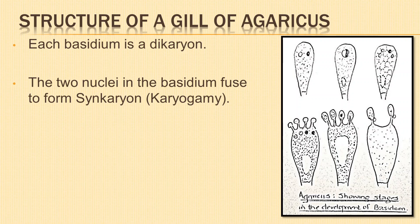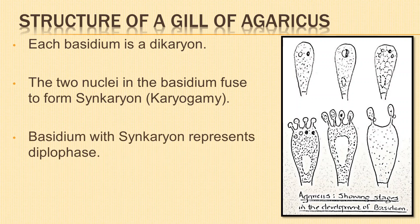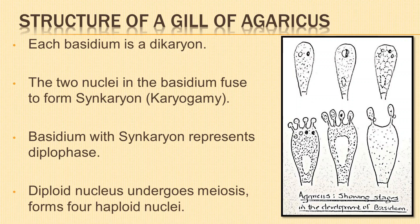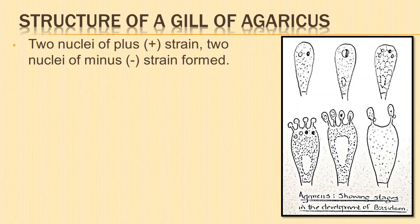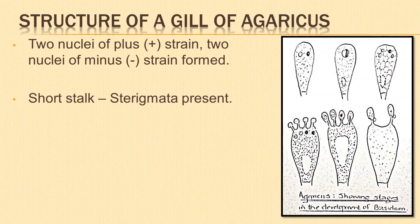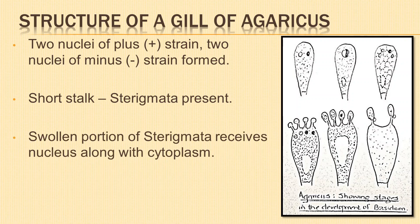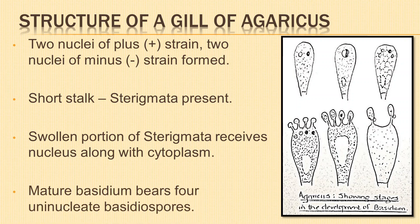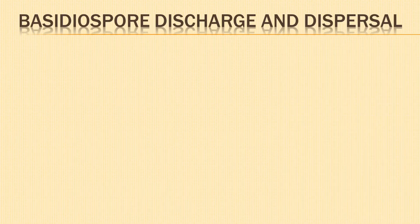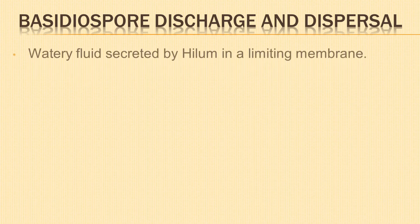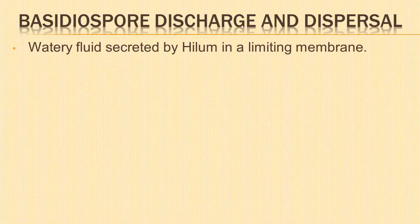The basidium with the synkaryon represents the short-lived diploid phase. The diploid nucleus undergoes meiosis to form four haploid nuclei, of which two are of plus strain and two of minus strain. Each basidium is elevated on short stalks called sterigmata. The tip of each sterigma swells and one nucleus along with cytoplasm is pushed into each swollen portion. A mature basidium thus bears four uninucleate basidiospores.